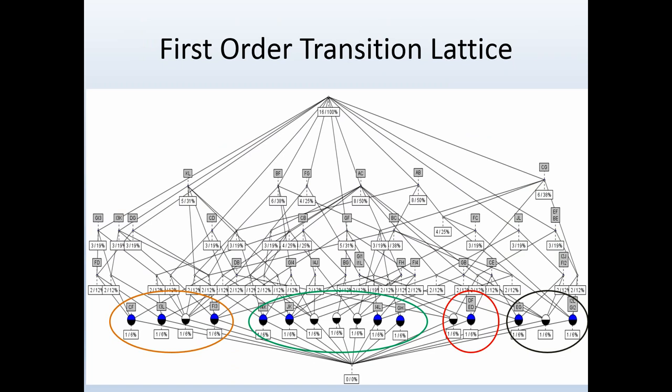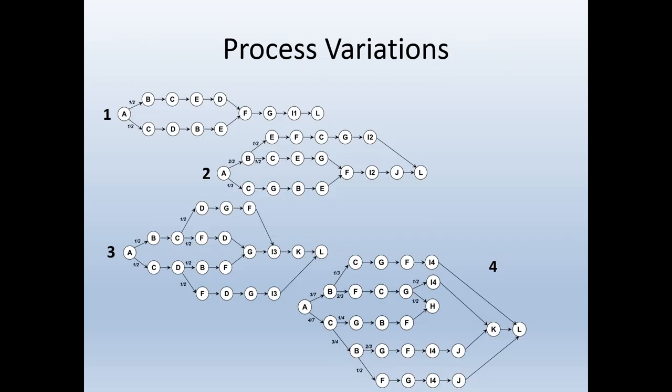This concept lattice shows you the first-order transition lattice for this example. The attributes are the first-order transitions, meaning transitions involving just two events. And we see immediately four process variations. They are encircled in orange, green, red and black. If we will apply this normalization procedure to the Markov model, we will obtain the following four variants: one, two, three and four.